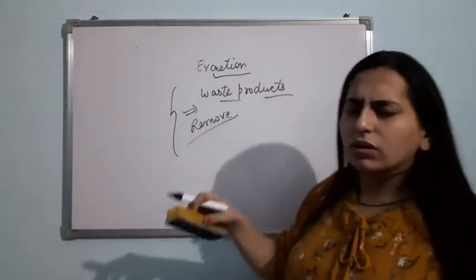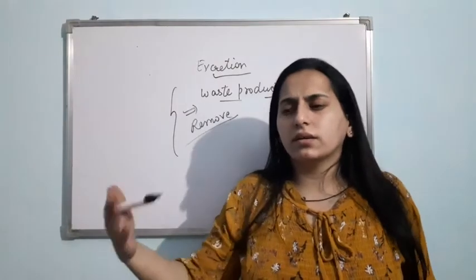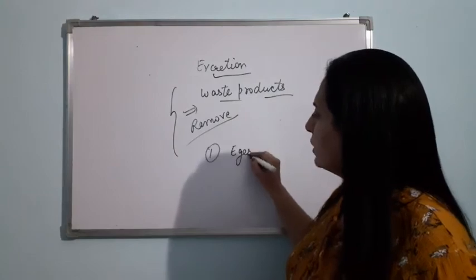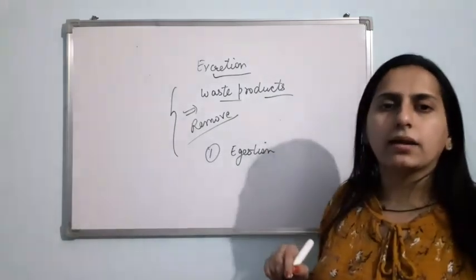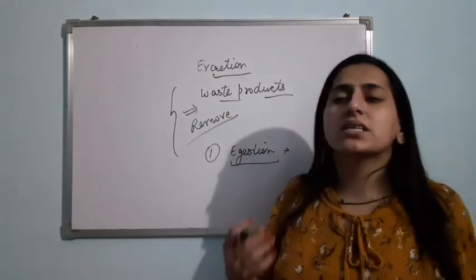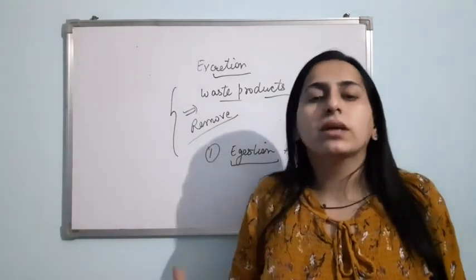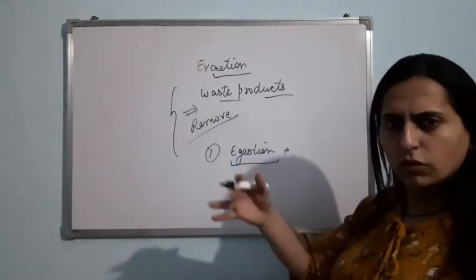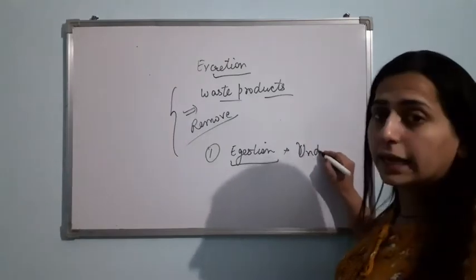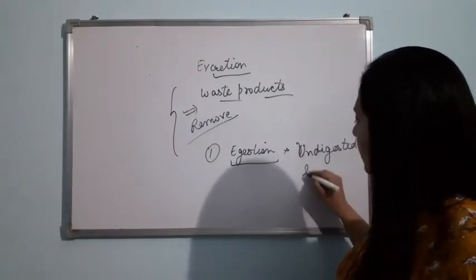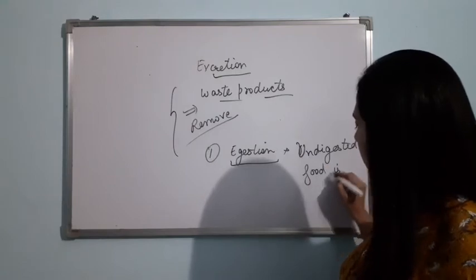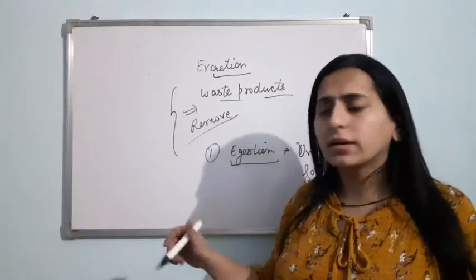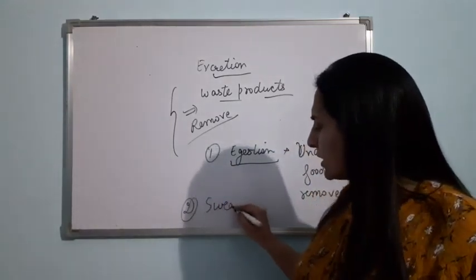Our body shows different kinds of excretion. Like egestion — we discussed this in chapter 2, Nutrition in Animals. In egestion, we are removing the undigested food through the anus. Then there is sweating, which you might have experienced. That is also a kind of excretion. In sweating, the sweat contains 95% water and some amount of salt. That is a kind of excretion as well.